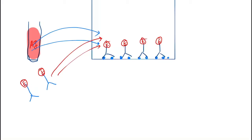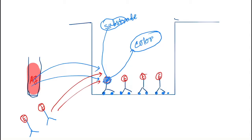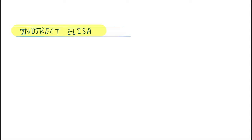We then add a substrate which reacts with the enzyme and forms a color — this is the positive test result. That was about Direct ELISA. Now let's move on to Indirect ELISA.